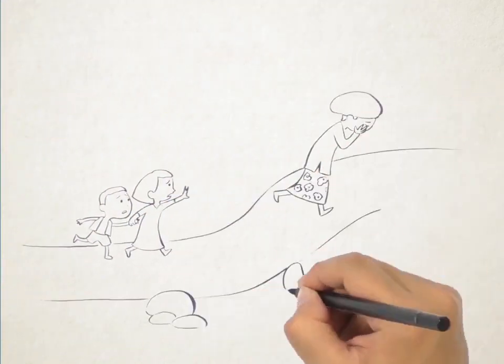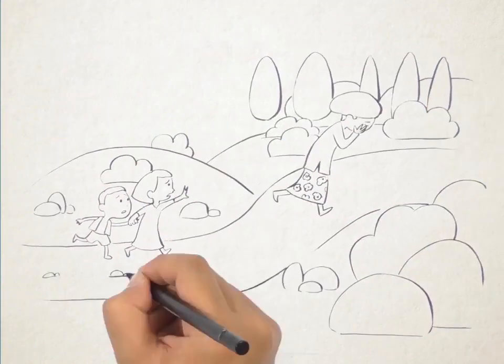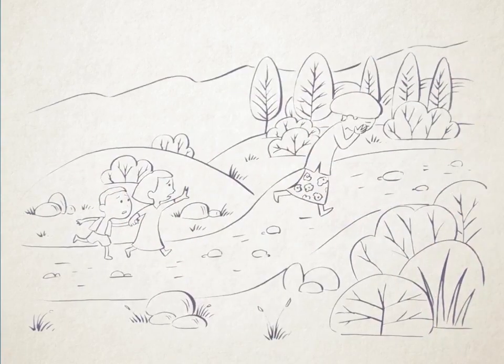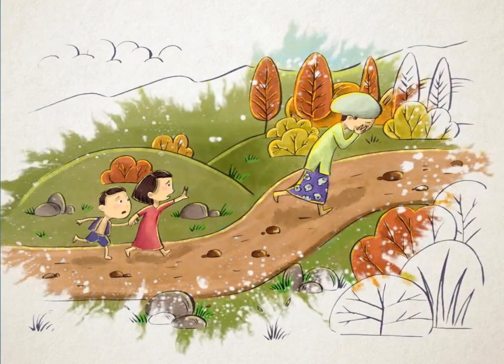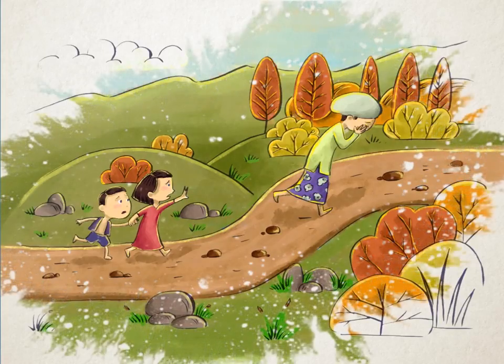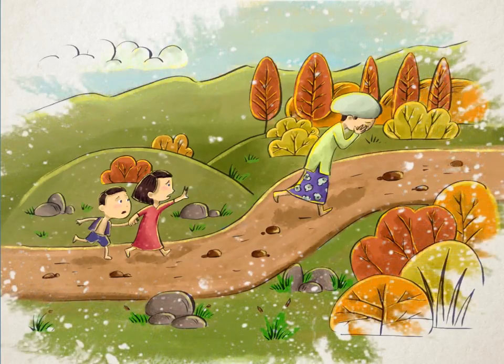And you know what happened next? Mahmina stormed out of the house and ran into the forest. Malur and Pakan rushed after her and begged their mother to return.